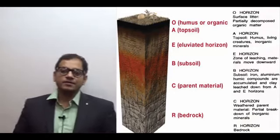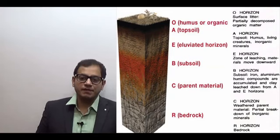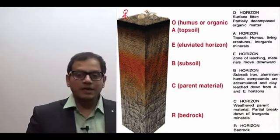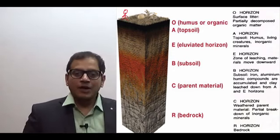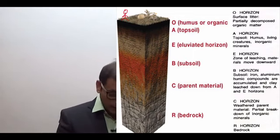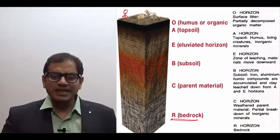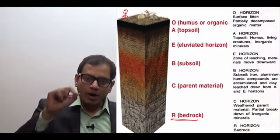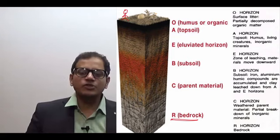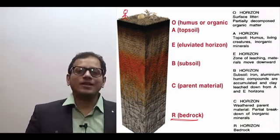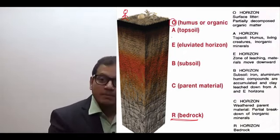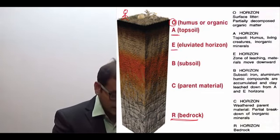The soil is made up of different layers from the top where we live down to the bedrock deep inside. The layers of the soil from top to bottom are: the O layer, then the A layer, then the E layer, then the B layer, the C layer, and finally the R layer.